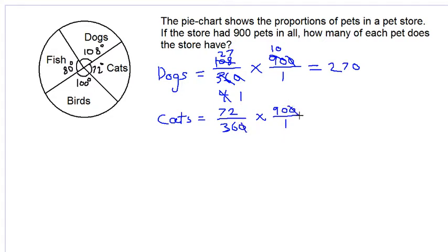Canceling zeros, 9 into 36 is 4, 9 into 90 is 10, 4 into 72... 18 times 10 is 180. So we have 180 cats.